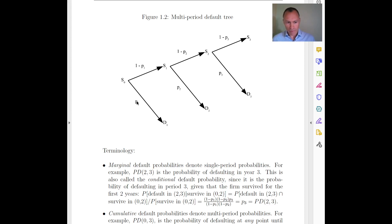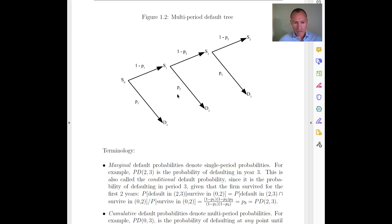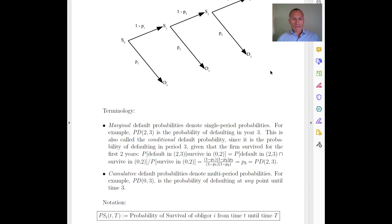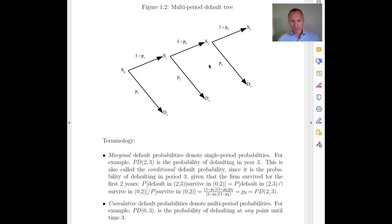Then one year after, the same branching repeats. At the end of the second year we can either be in default with some probability that may differ from the first year's probability, or alive in the state of survival with one minus that probability. We keep branching like this. This setup will be very useful and we will come back to it many times.